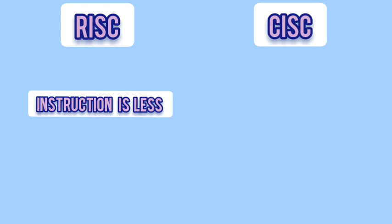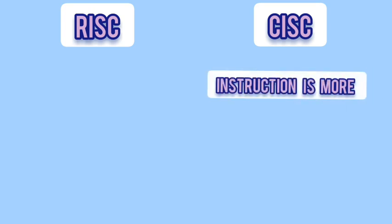The number of instructions is less in RISC, whereas the number of instructions is more in CISC.